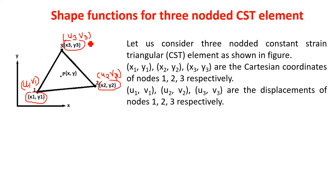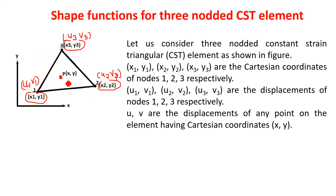Now if you select any point P in this CST element, X and Y are the Cartesian coordinates of that point P. And U, V are the displacements of that point P in the X and Y directions respectively. This is the CST element under consideration.